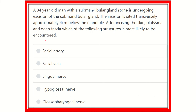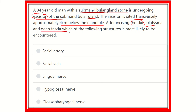From this question, the key point is that for a submandibular gland stone, the gland is excised and the incision is given 4 cm below the mandible. After incision of the skin, platysma, and deep fascia, we need to identify which structure will be encountered first.